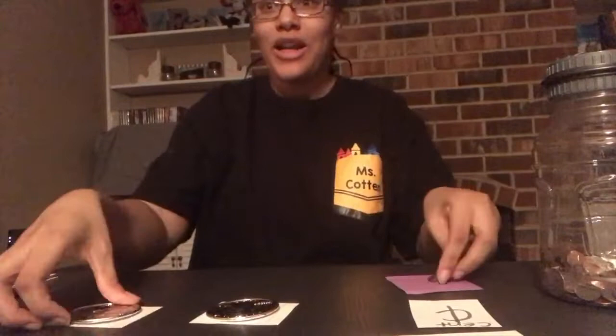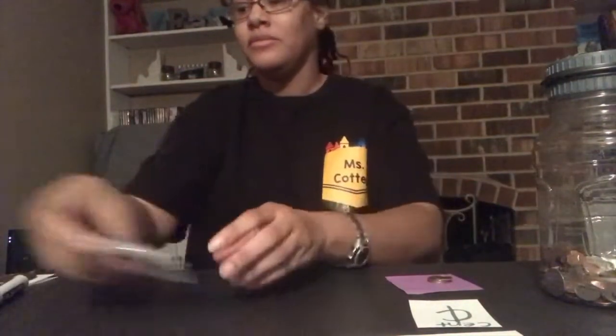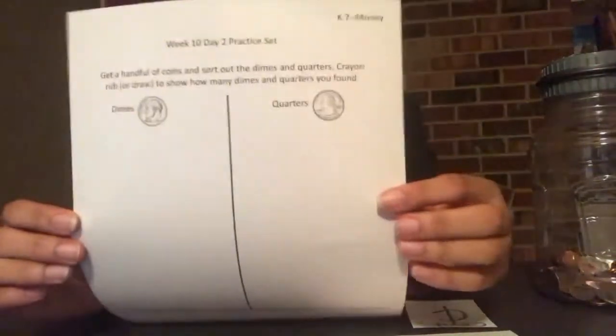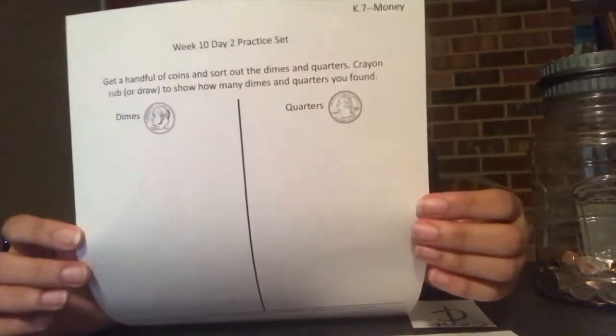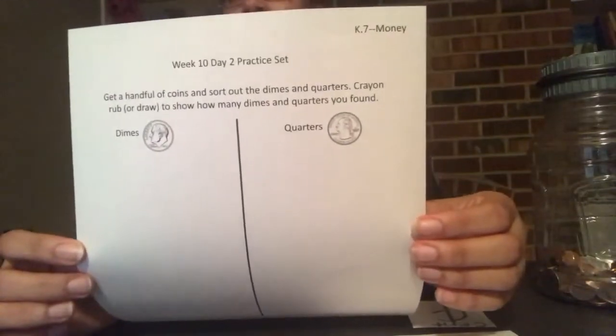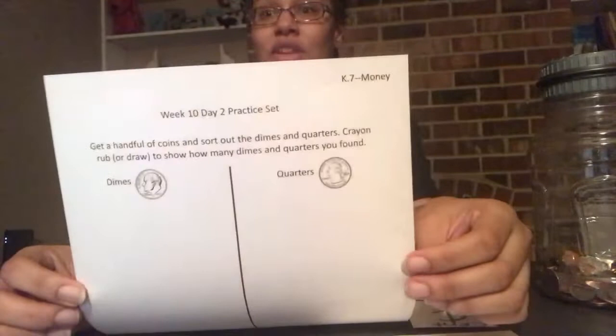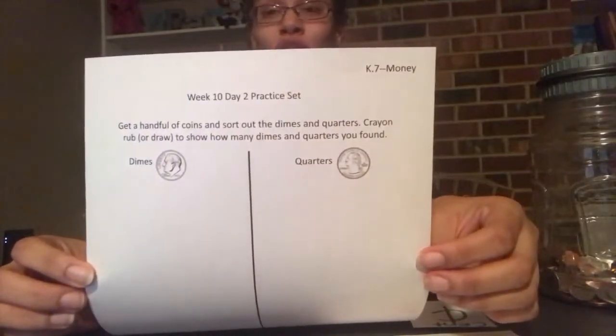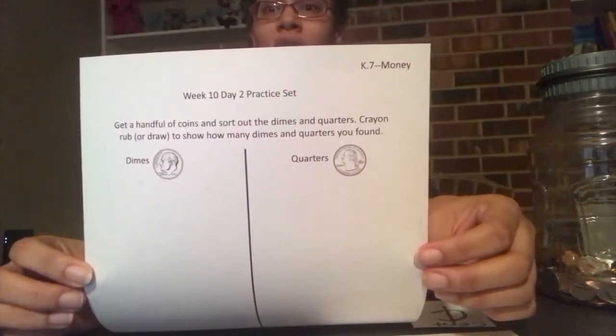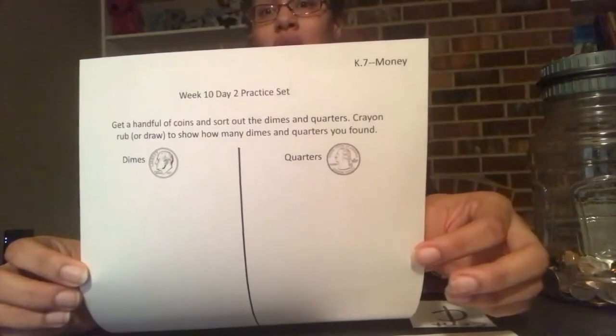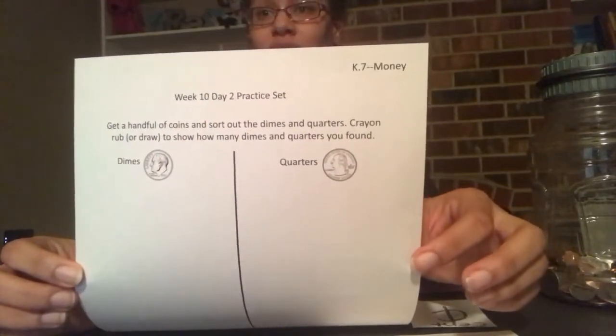Let's talk about our practice set for today. The practice set looks like this: you're going to get a handful of coins and sort the dimes and quarters. Then you're going to crayon rub or draw to show how many dimes and quarters you found. Ms. Cotton is going to teach you how to crayon rub — I love crayon rubbings!